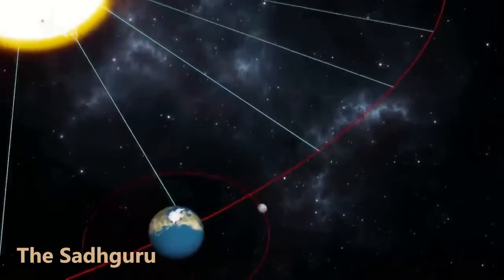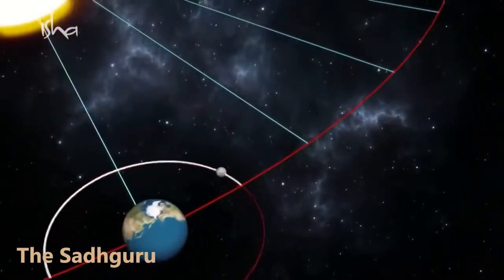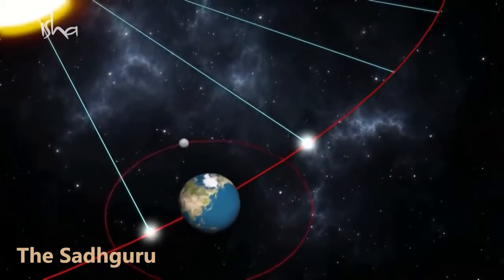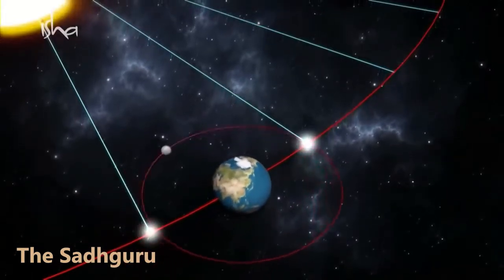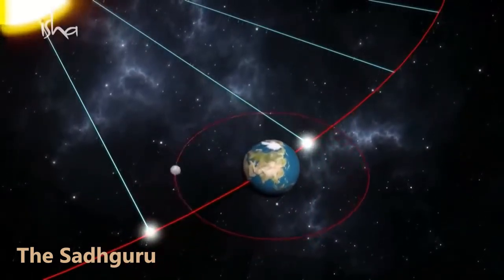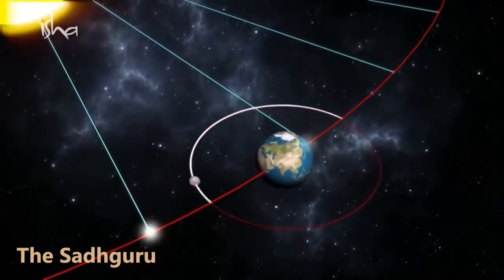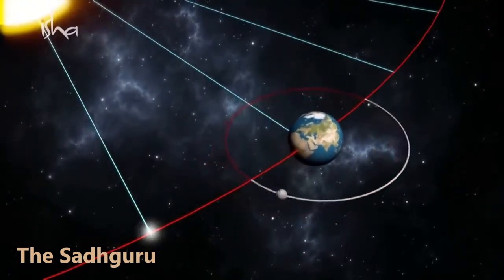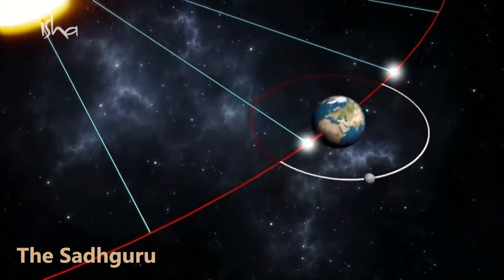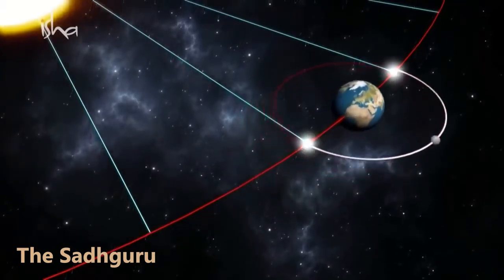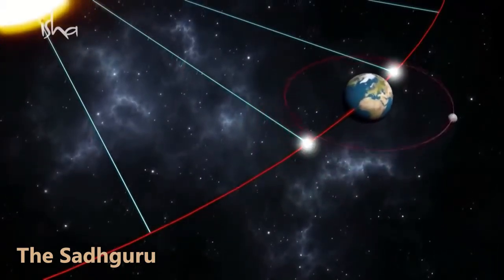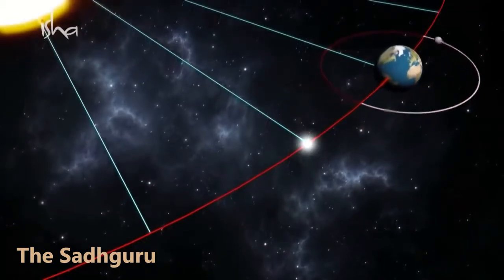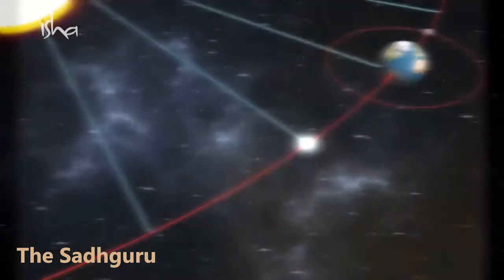As the planet travels from one nakshatra to the next, what is happening is the moon is making its half circle. As it goes to the next one, it completes the cycle. And as this is happening, the human cycles within the human body are responding and corresponding to that.